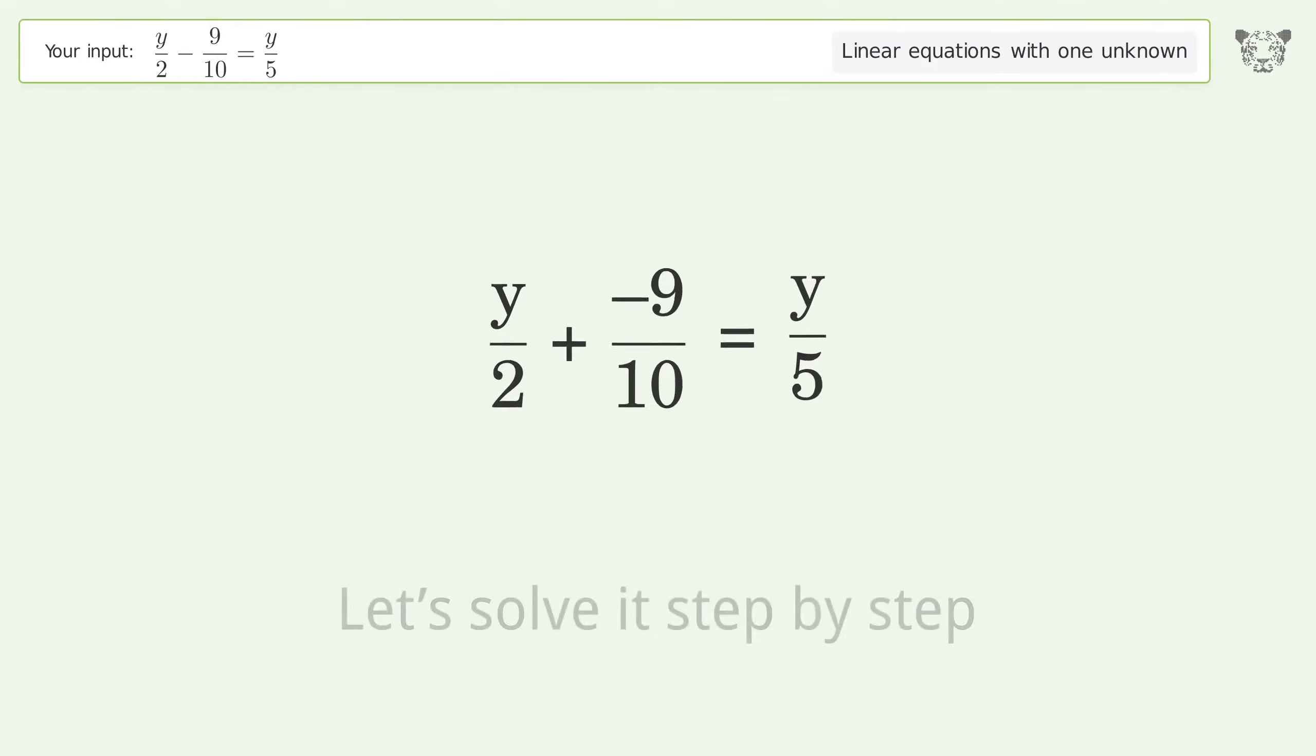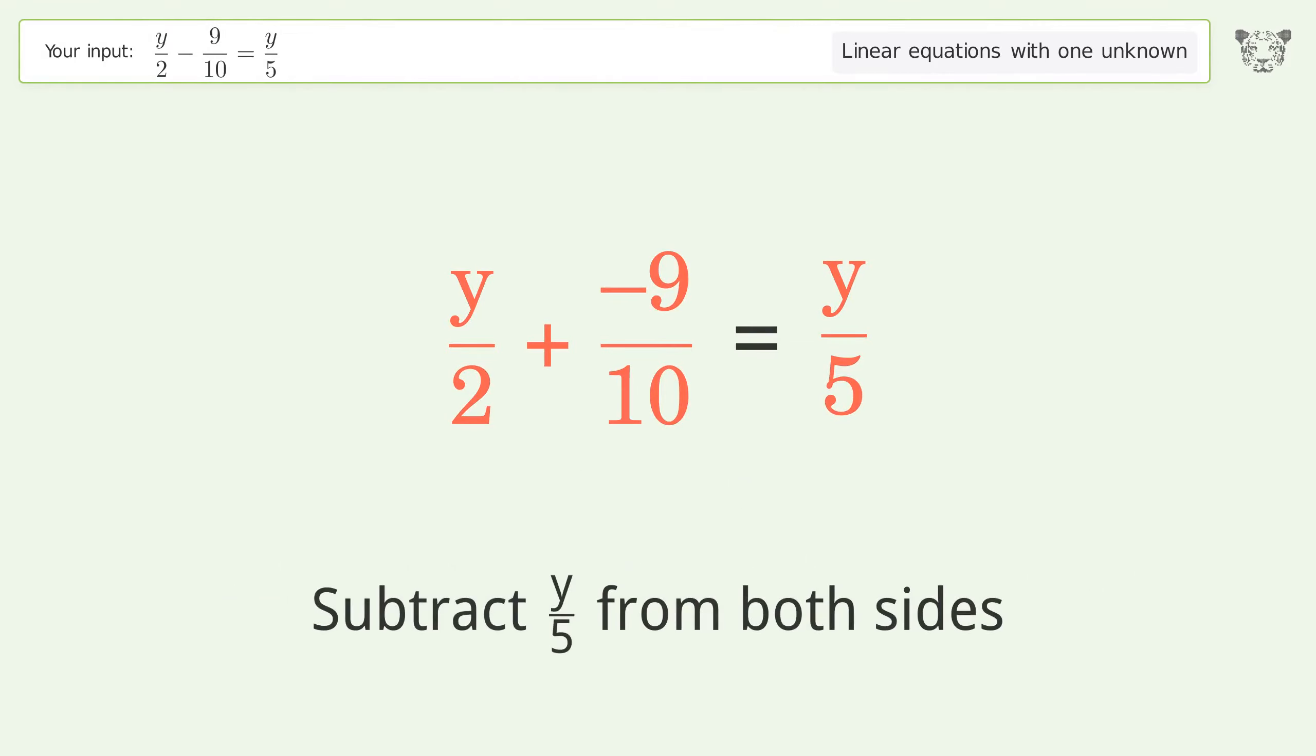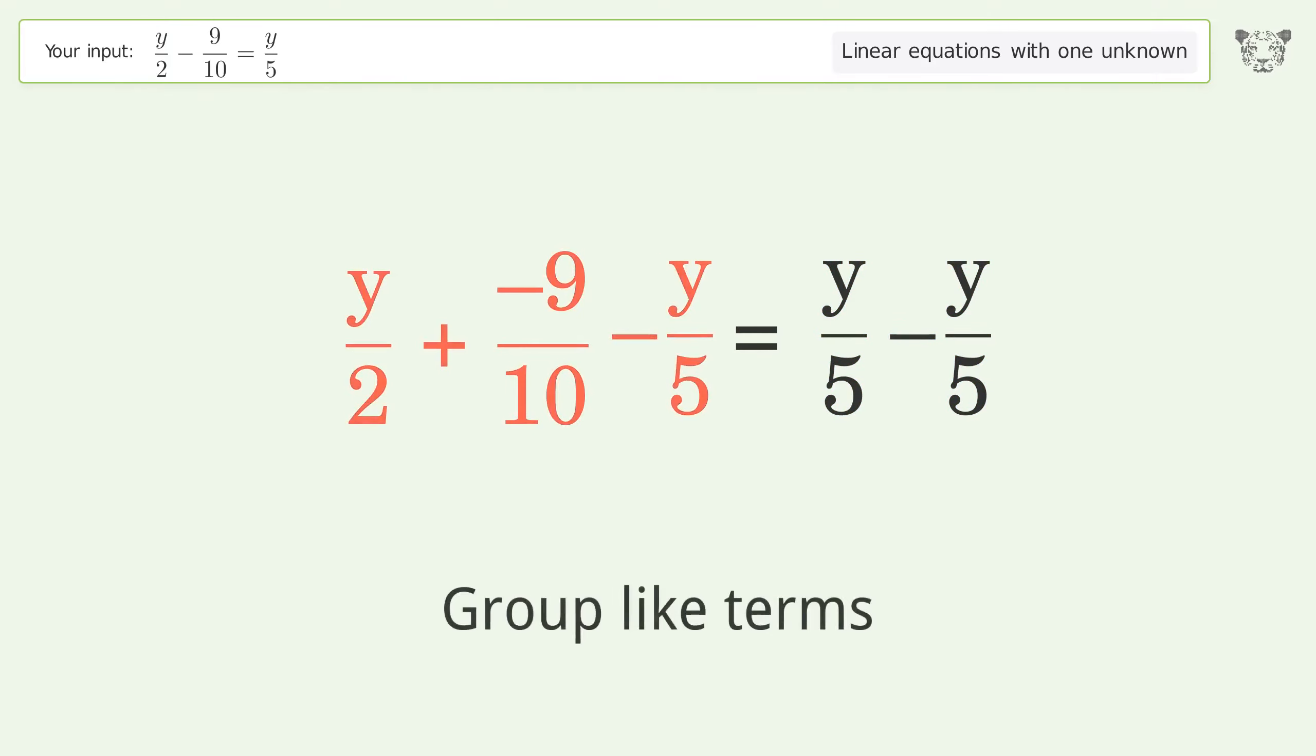Let's solve it step by step. Group all y terms on the left side of the equation. Subtract y over 5 from both sides. Group like terms.